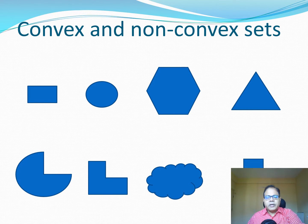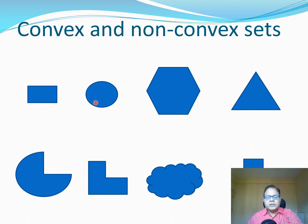Here are some examples of convex sets and non-convex sets. You can see all these are convex sets — if we draw a line inside any of these sets, the points on the line remain within the set. And these are examples of non-convex sets.